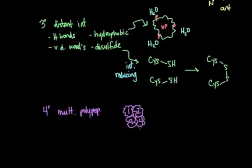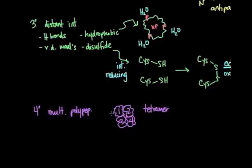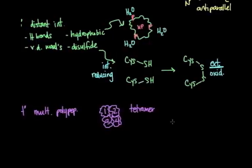Since this protein has four subunits, it is called a tetramer. And so if I were to have two subunits, it would be called a dimer. Three would be called a trimer. And then anything above four is called a multimer.